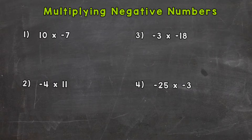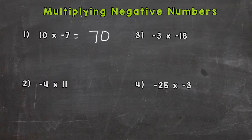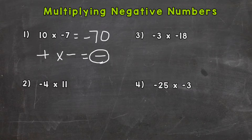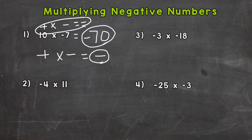Let's jump right in to number one. For number one we have 10 times negative 7. The first thing we need to do is multiply 10 times 7 and that gives us 70. This is not the final answer though because we have a negative number involved, that negative 7. Whenever we have a positive number times a negative number our answer is going to be negative. So this is actually going to be negative 70. So 10 times negative 7 equals negative 70.